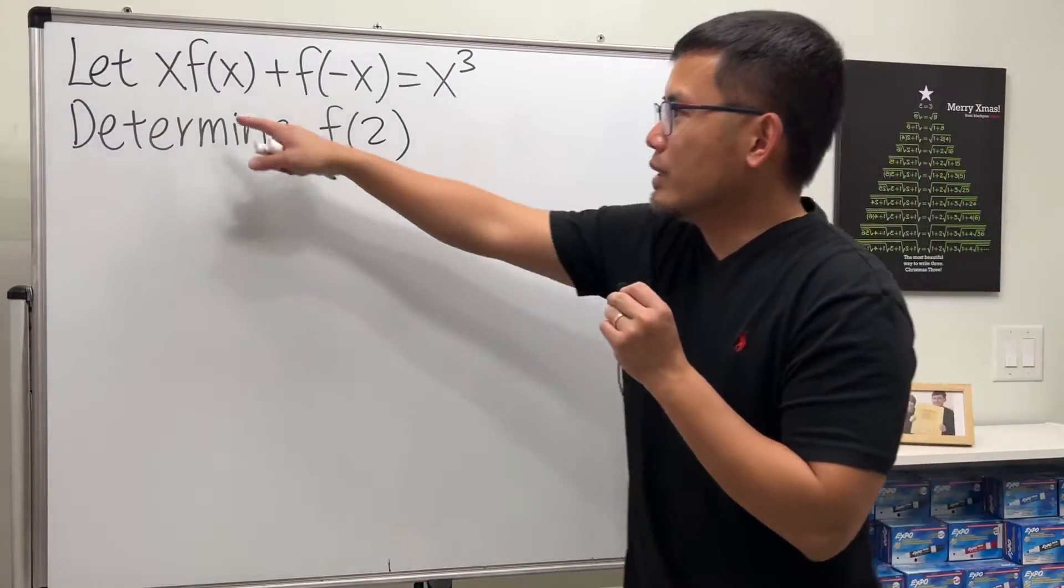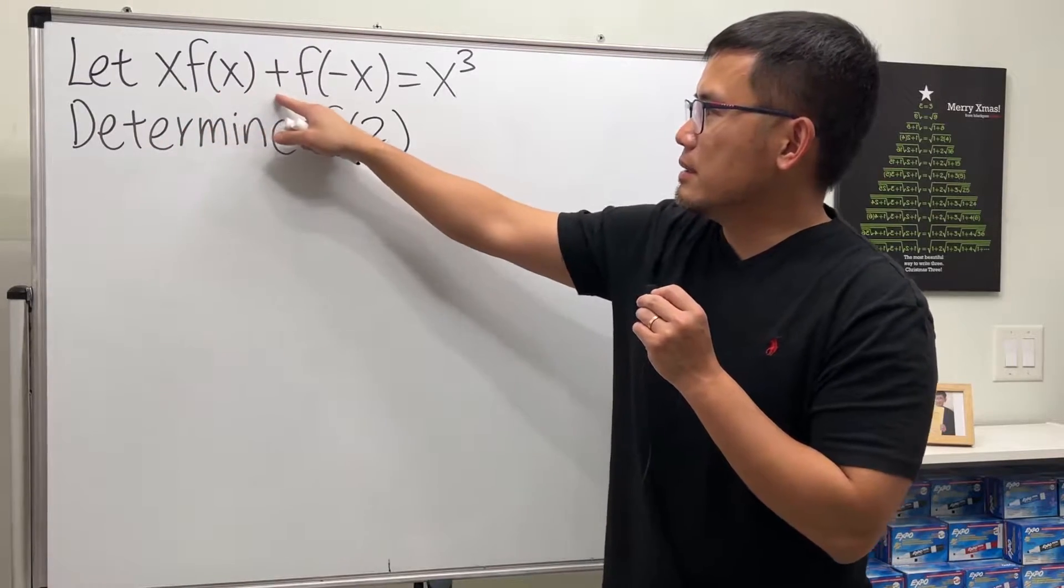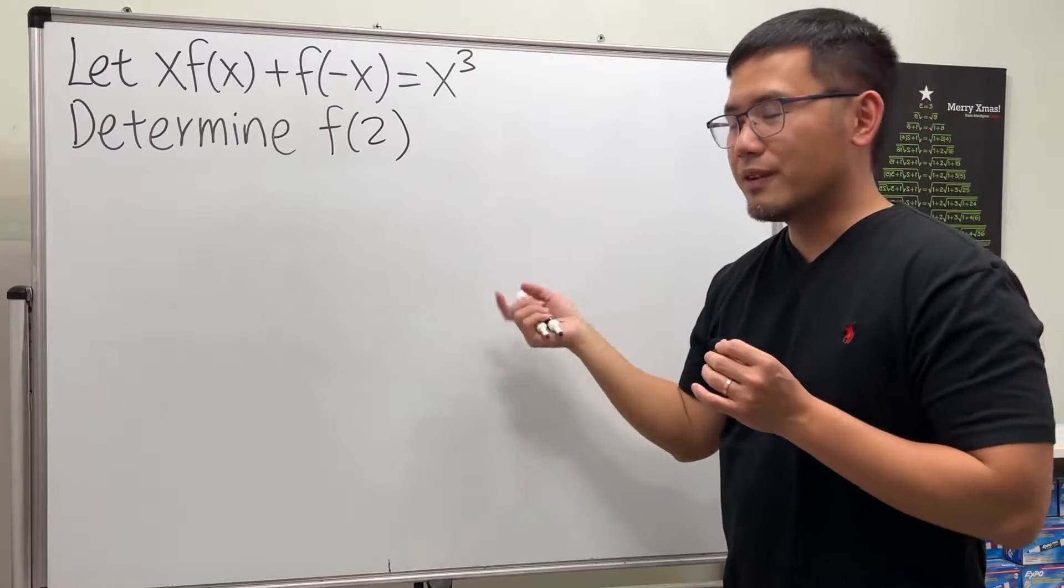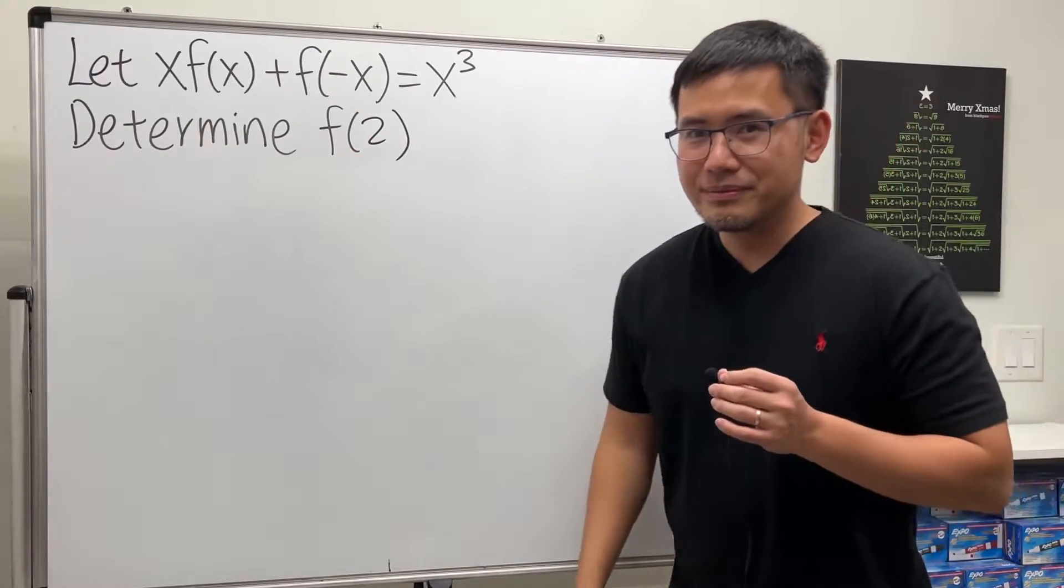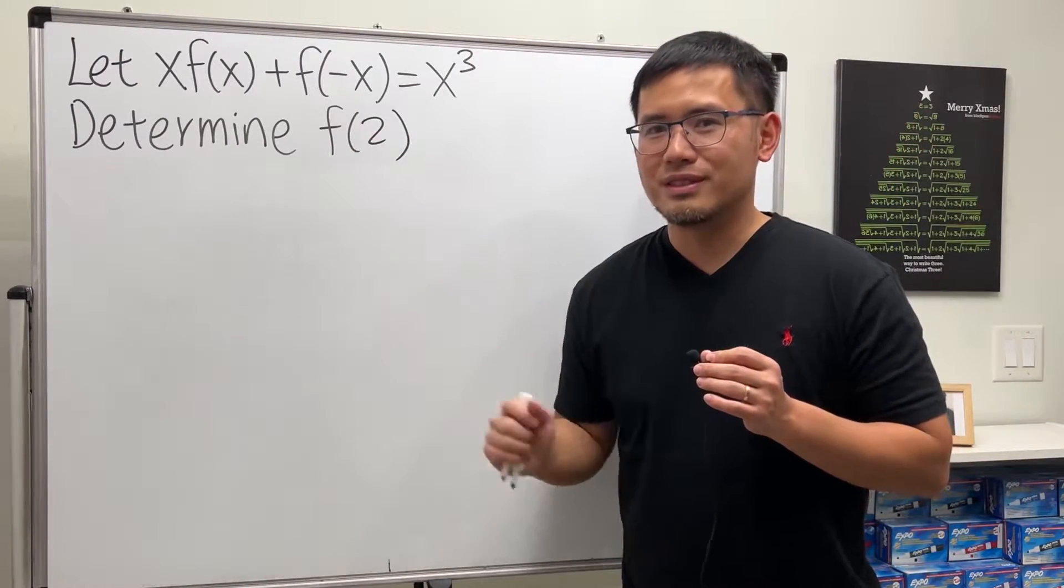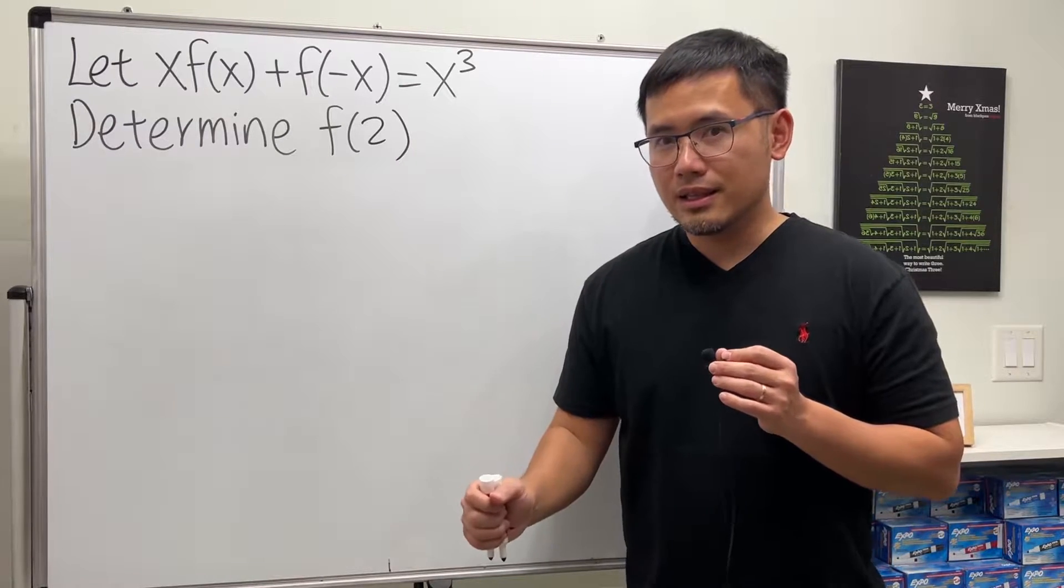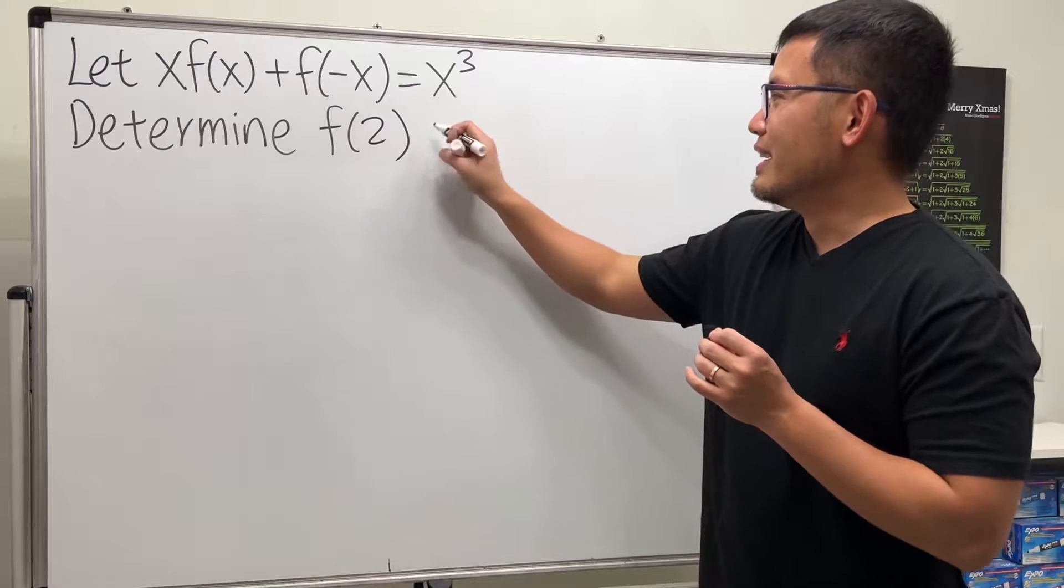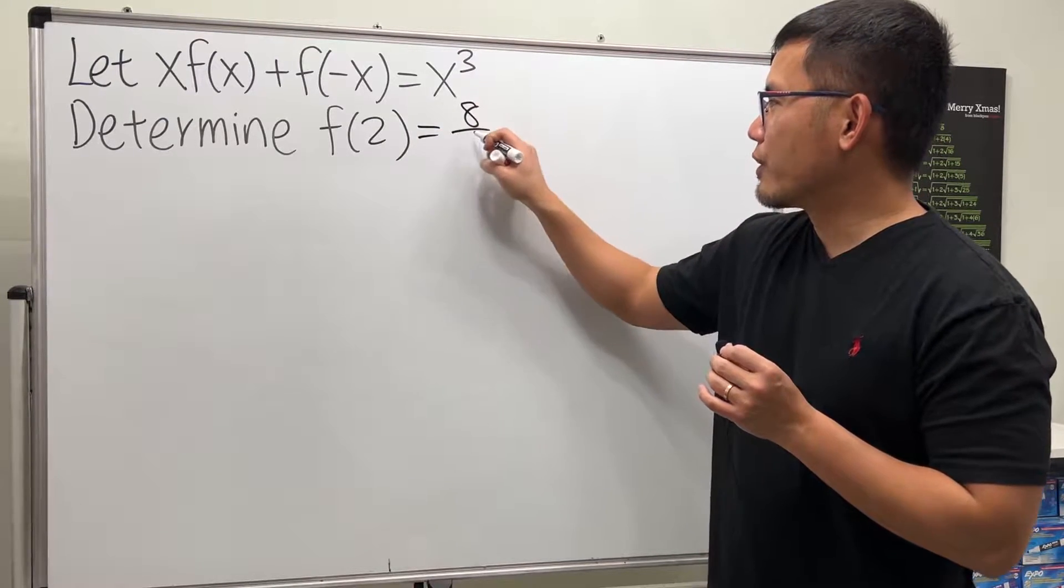But anyway, we are given x times f(x) plus f(-x) equals x³, and we are going to find the value for f(2). So go ahead, pause the video and try it first. Done? Do you want to know the answer first? Okay, I'll tell you the answer is 8/5.